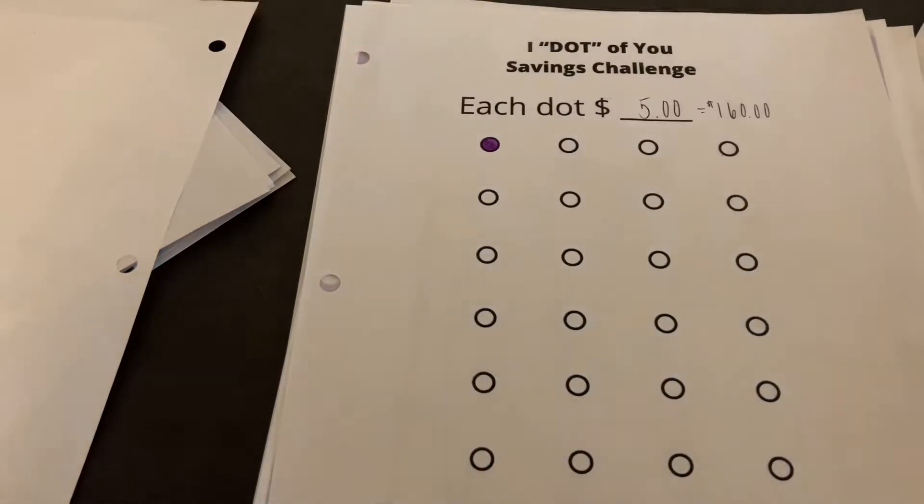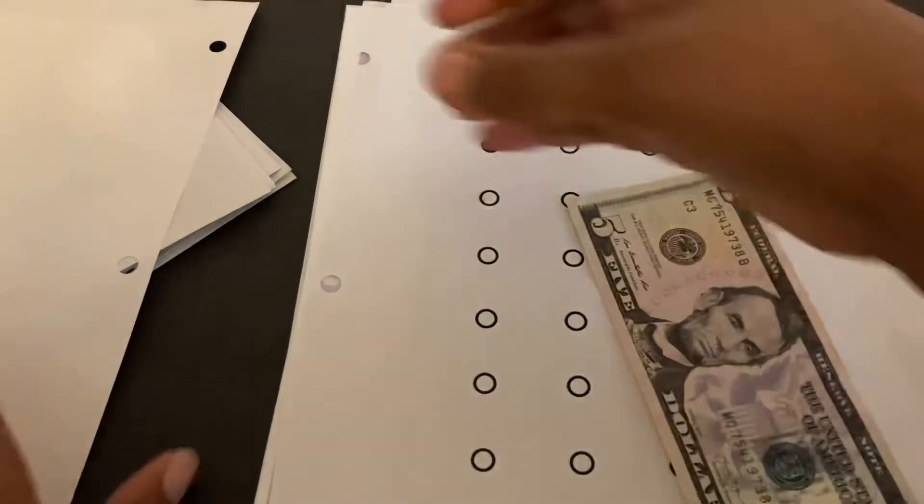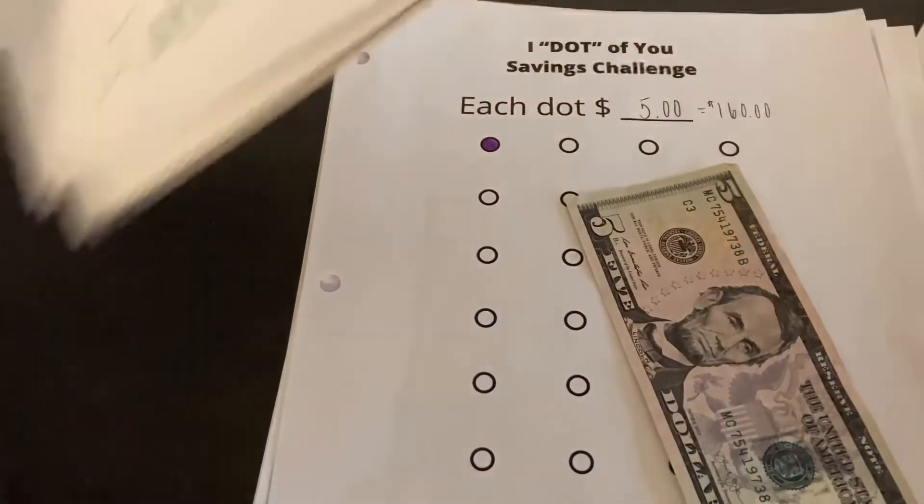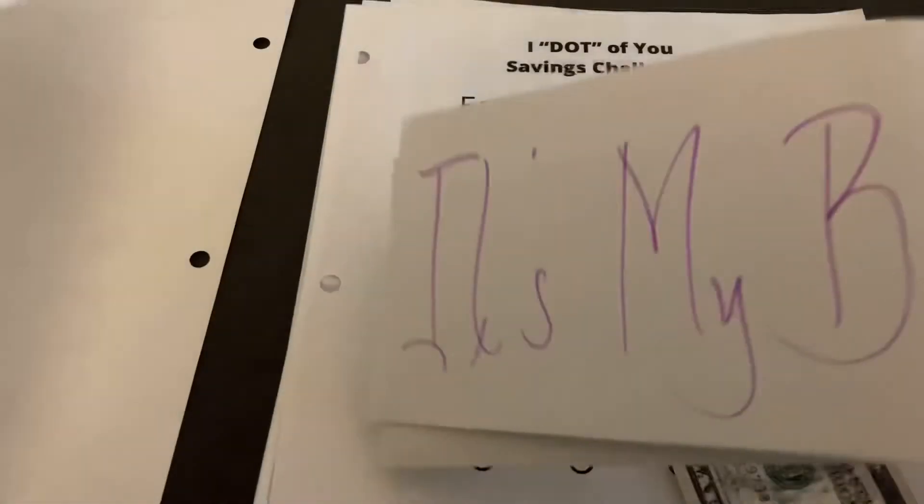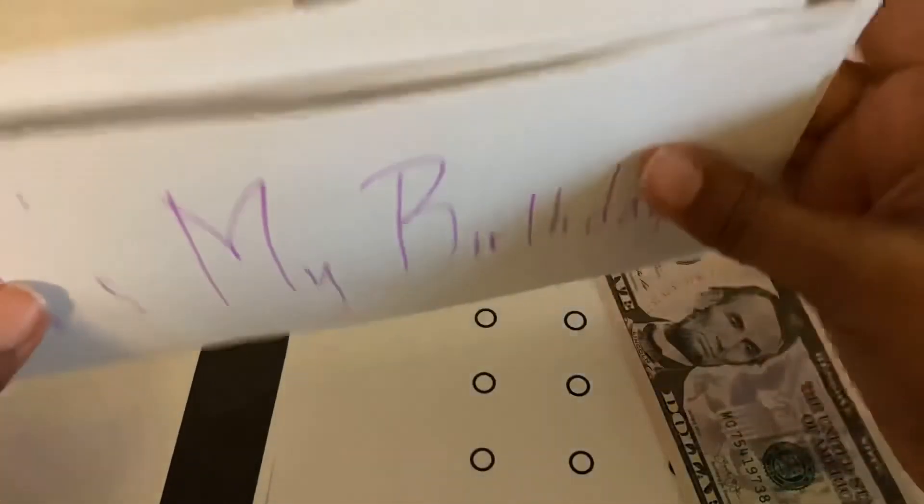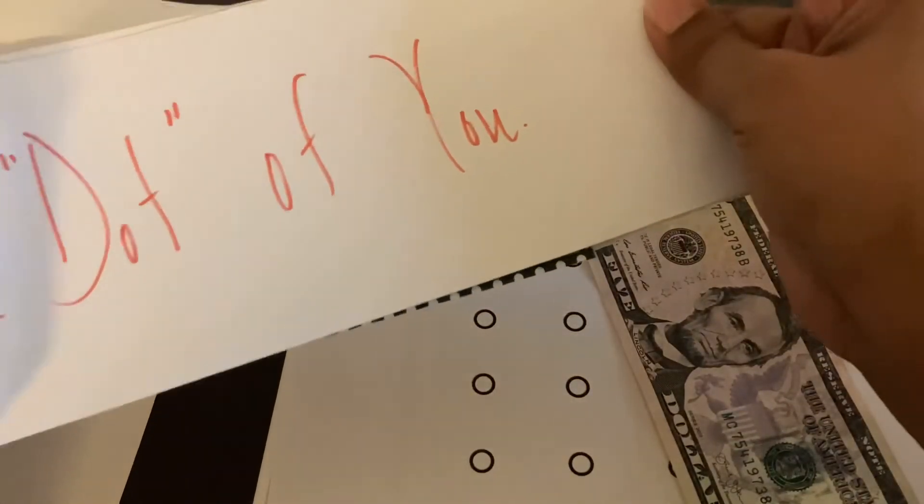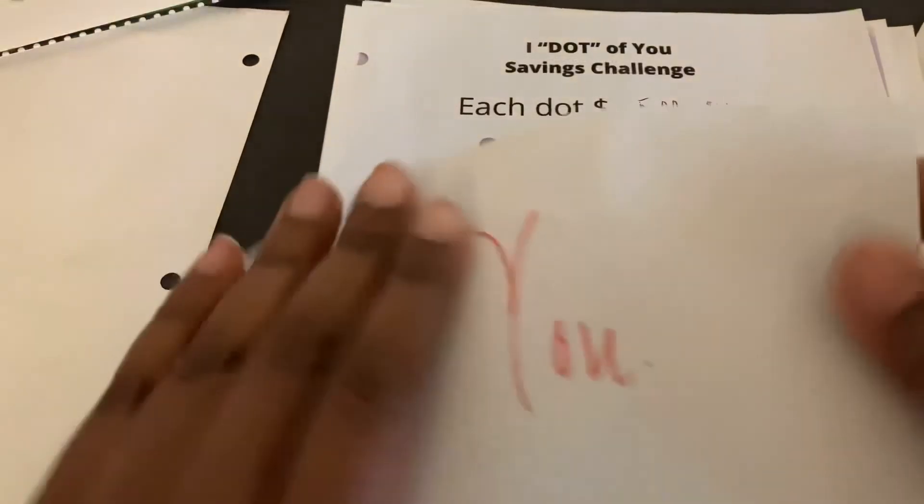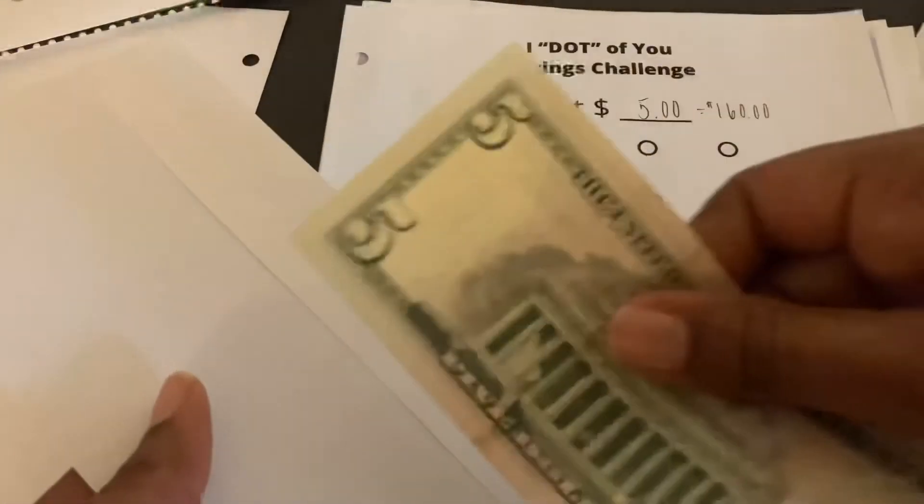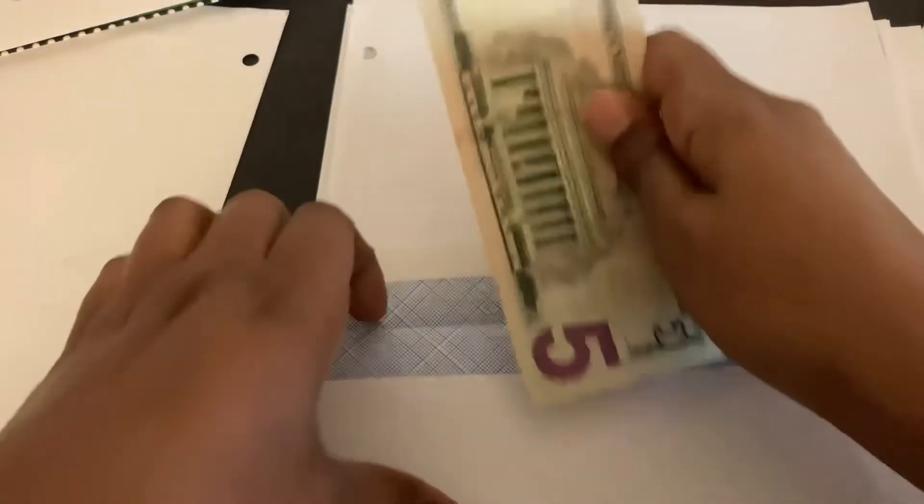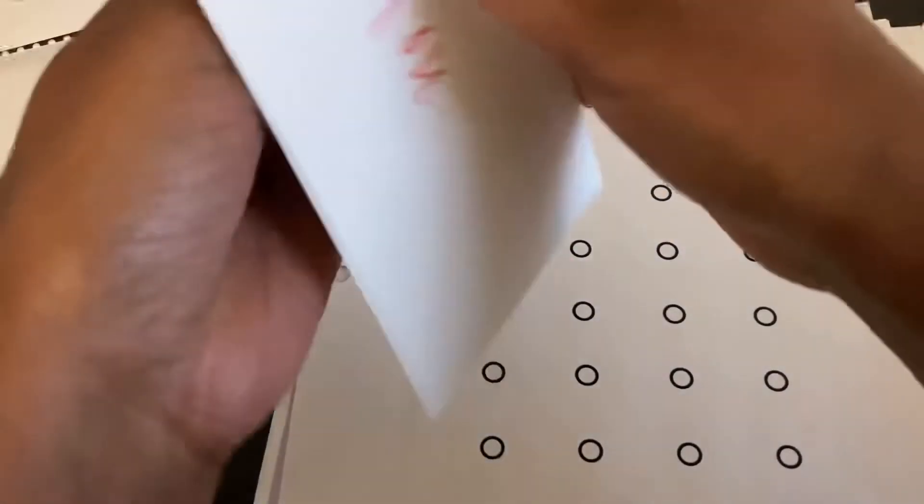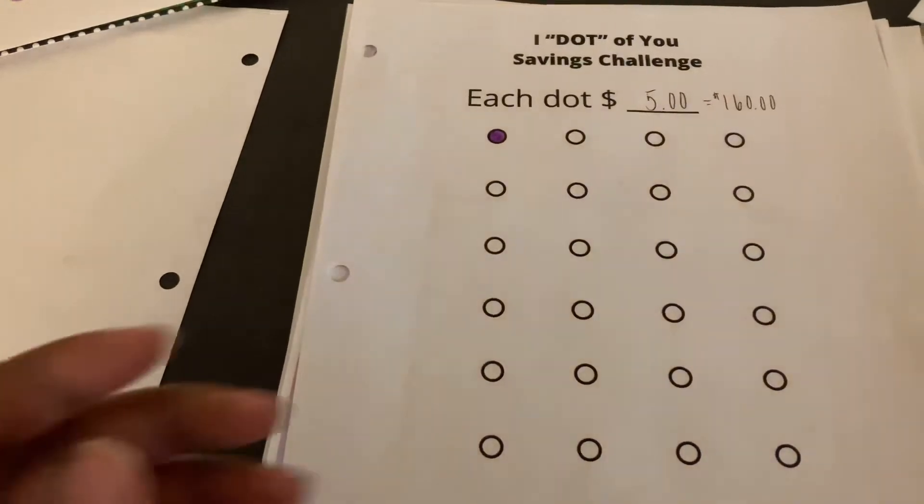And then I'll take this $5, and once again, I just have regular envelopes, and I'm going to find the envelope for I Dot of You. So this is going to be the first $5 to go in this envelope.